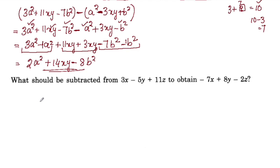What should be subtracted from 3x - 5y + 11z to obtain -7x + 8y - 2z?